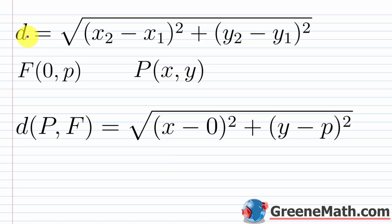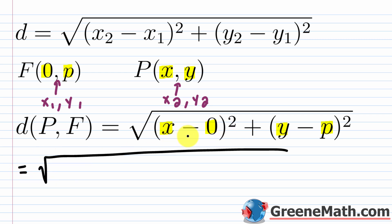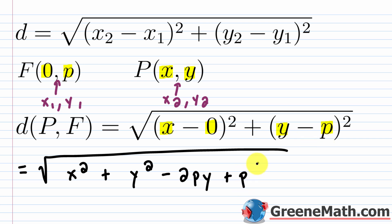Using the distance formula — the square root of (x₂ minus x₁) squared plus (y₂ minus y₁) squared — we calculate the distance between P(x, y) and F(0, p). Plugging in: x sub 2 is x, x sub 1 is 0, y sub 2 is y, y sub 1 is p. This gives the square root of x squared plus (y minus p) squared, which expands to the square root of x squared plus y squared minus 2py plus p squared.